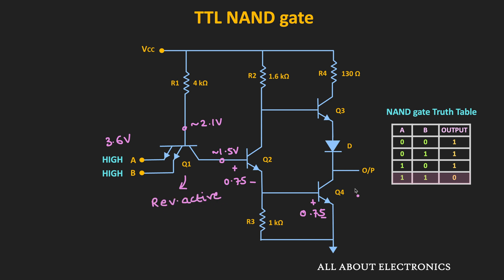Since Q4 is operating in saturation, the output voltage is roughly equal to 0.2V. And since Q2 is also operating in saturation, the voltage at the base of Q3 will not be sufficient to turn Q3 ON — therefore Q3 will remain in the OFF condition. So when both inputs are high, the output of this TTL NAND gate is equal to logic low, roughly 0.2V.